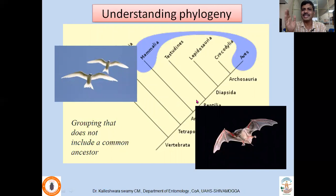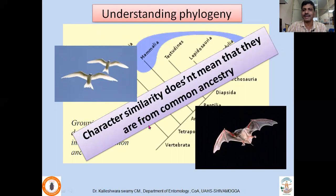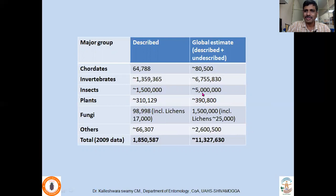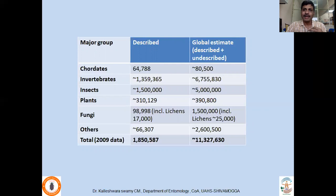Character similarity does not mean they are from a common ancestry. Insects are the most dominant organisms — about 1.8 million organisms have been described, among them more than 1 million are insects. Estimates indicate that more than 5 million insect species are on this planet Earth. Similarly, more than 10 million species of organisms are awaiting discovery. On average, about 15,000 to 18,000 new species of organisms are described every year. Taxonomists keep on describing new organisms, but collecting and placing them at different ranks is a very tough job unless phylogenetics is understood.